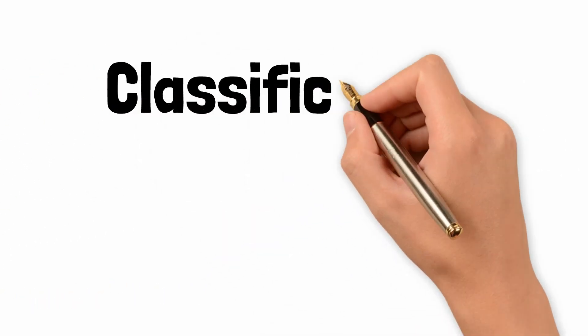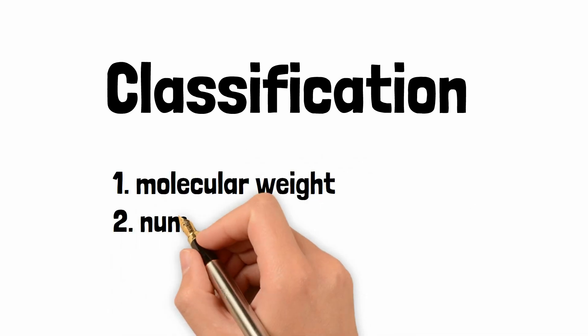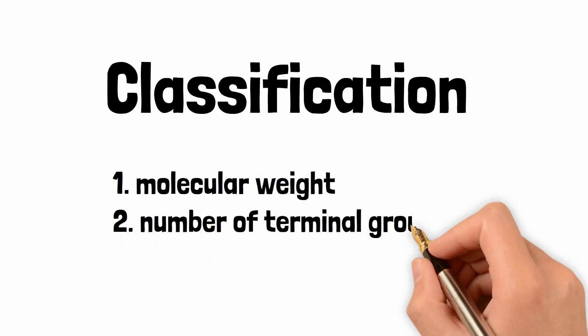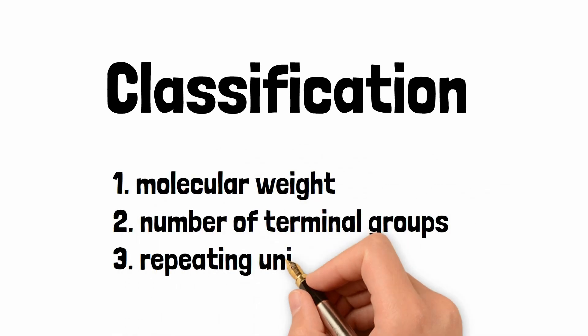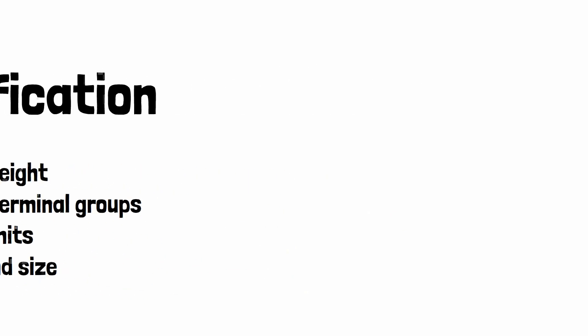In general, dendrimers having different generations, G0 to Gn, can be classified into different types based on their molecular weight, the number of terminal groups, repeating units, diameter, and size.